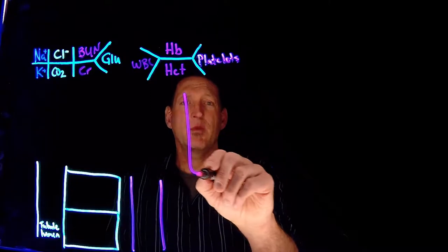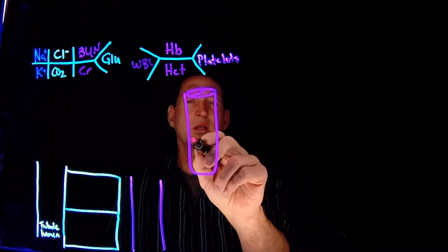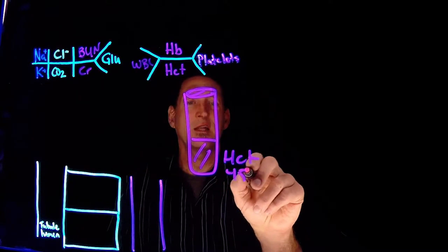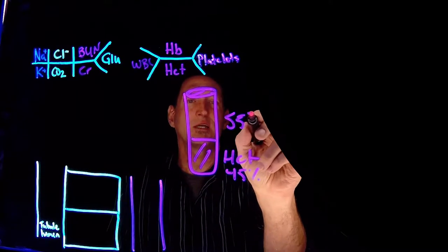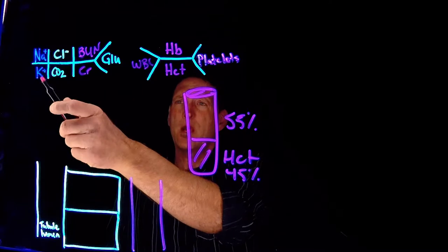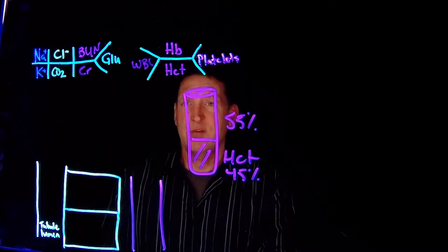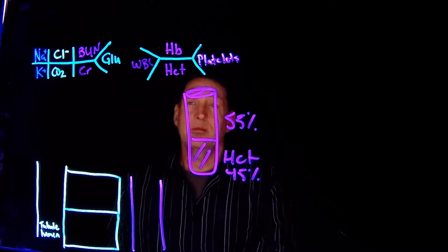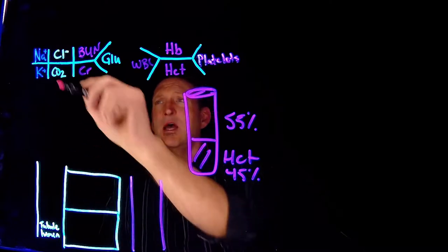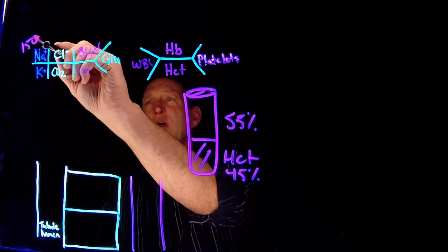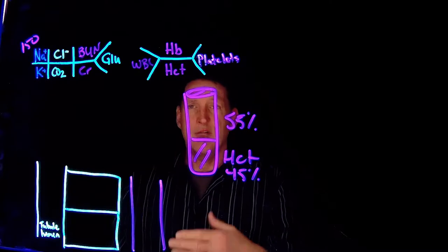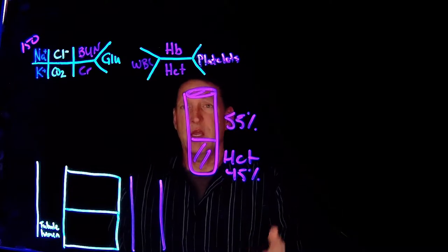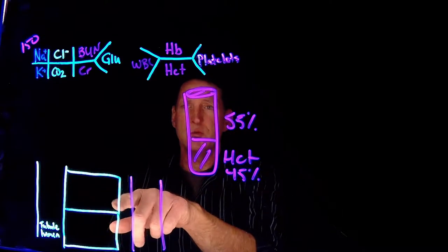For example, if I centrifuge blood, I've got hematocrit at 45% and plasma at 55%. Normally my sodium range is 135 to 145. But if sodium were 150, one thing I might think is hyperaldosteronism — you'll see this in Cushing's. With hyperaldosteronism, there's increased reabsorption of sodium in the tubule cells.